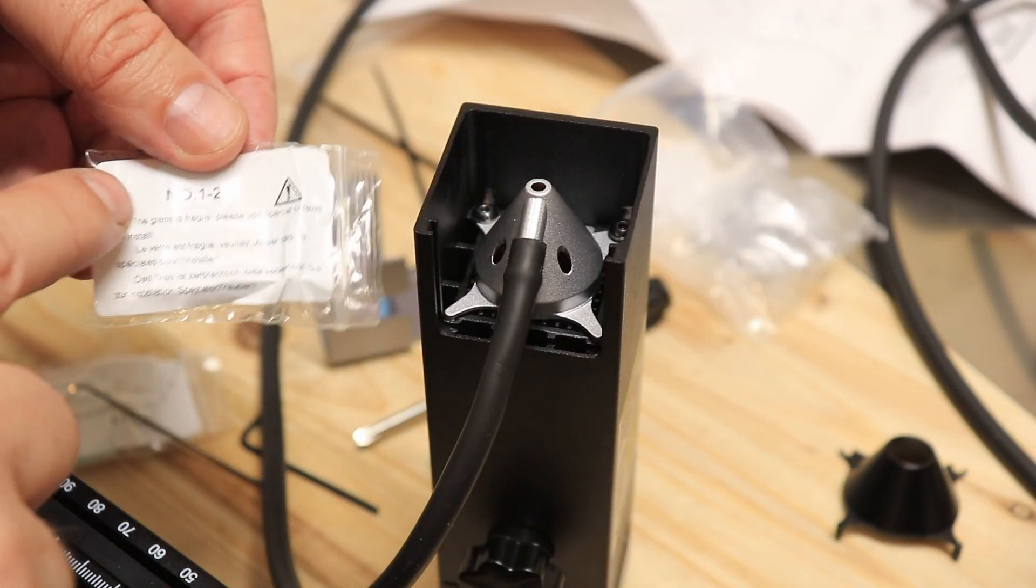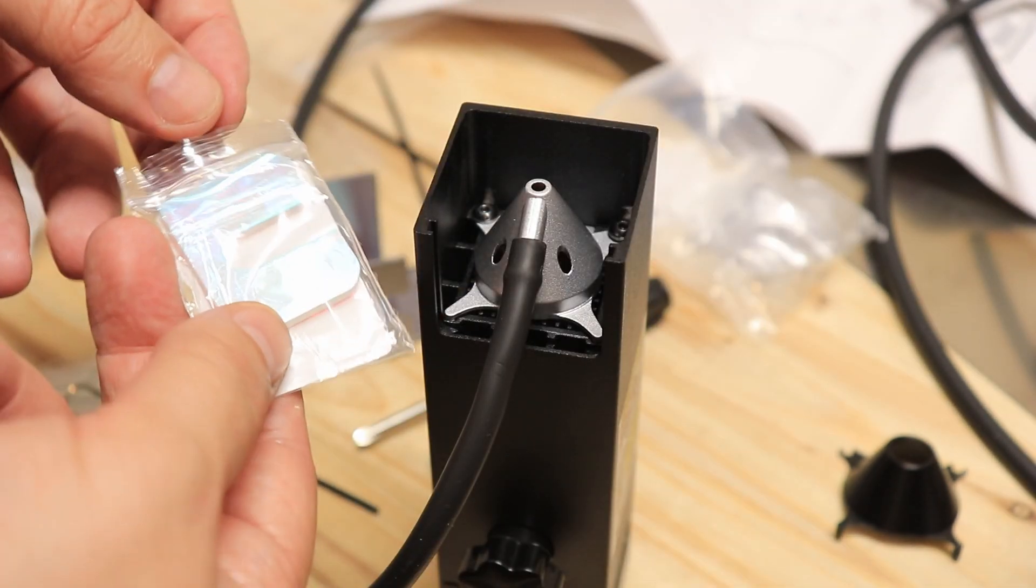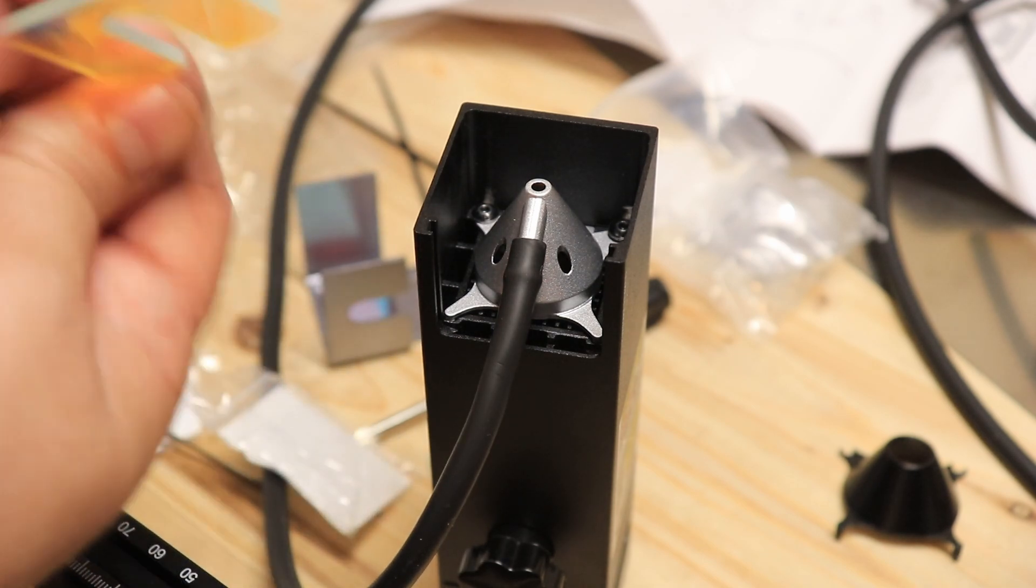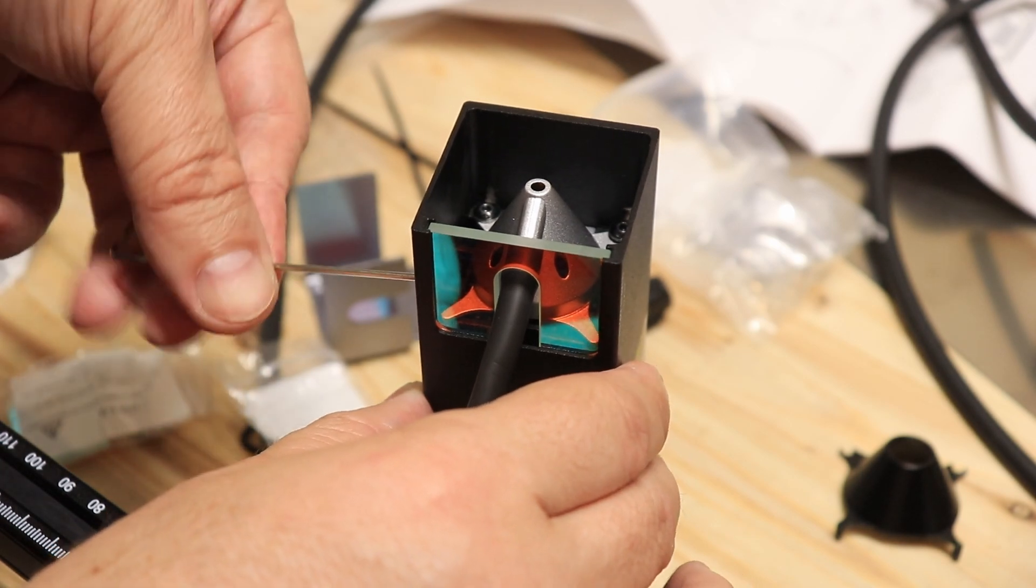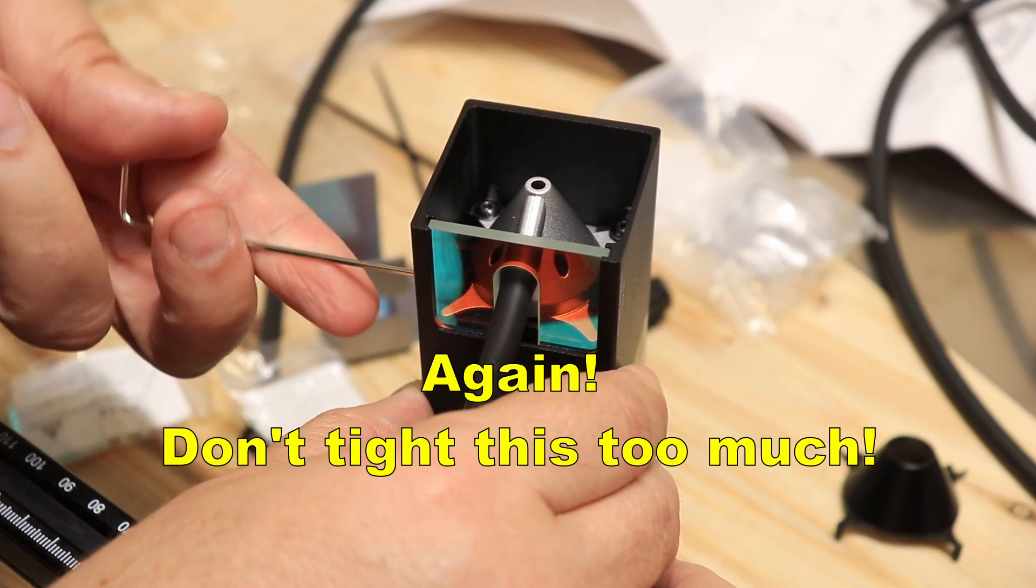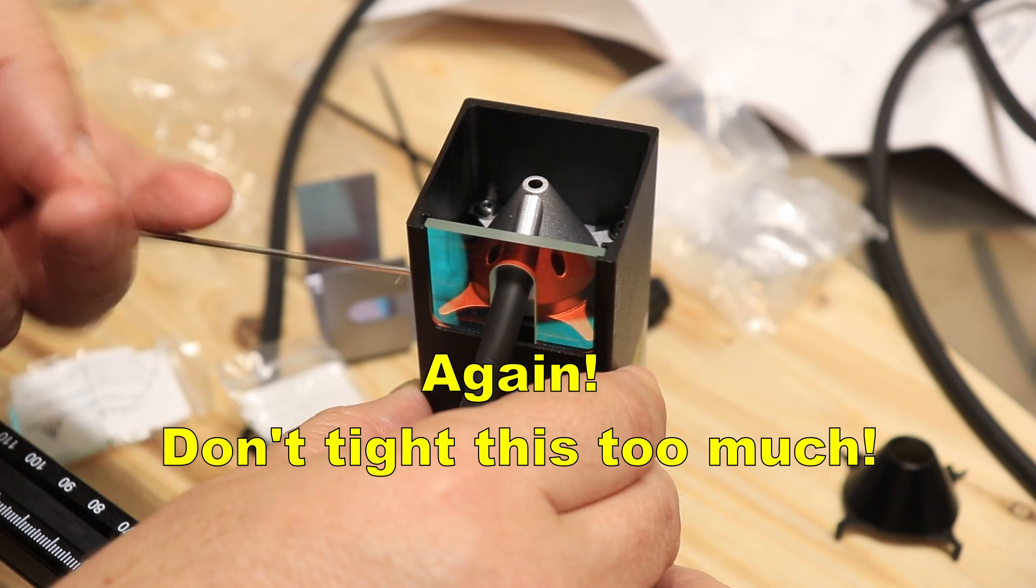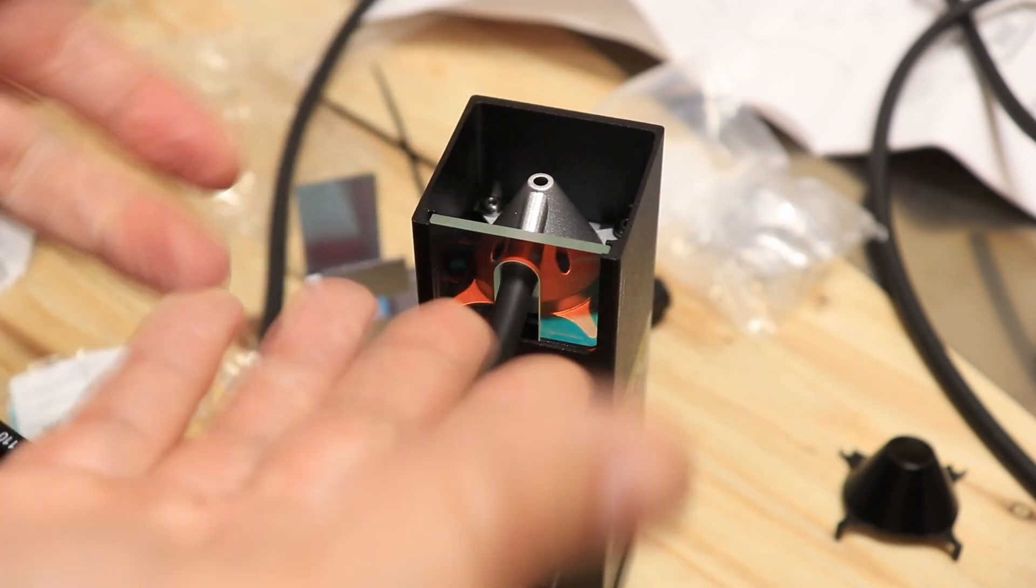According to instructions I will install this number 1.2 protection glass. I will lock its position with this set screw on the side but be careful, don't tighten this too much. And it is ready.